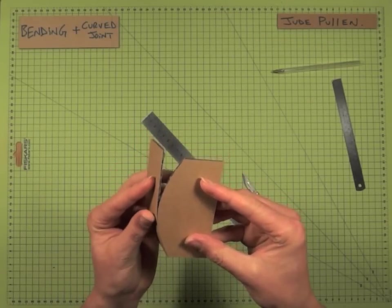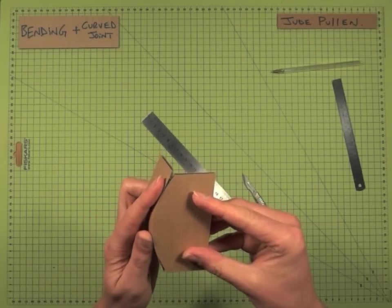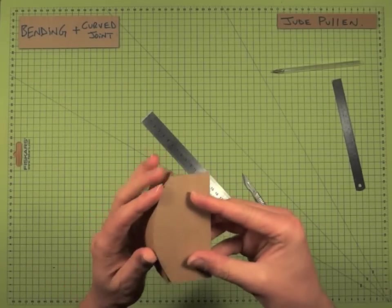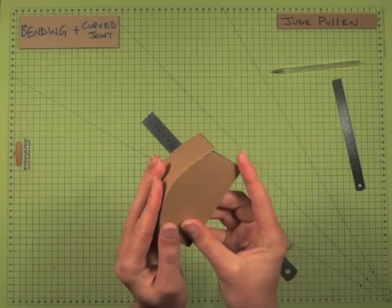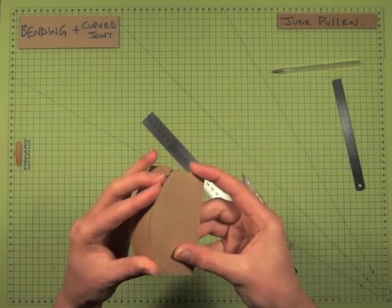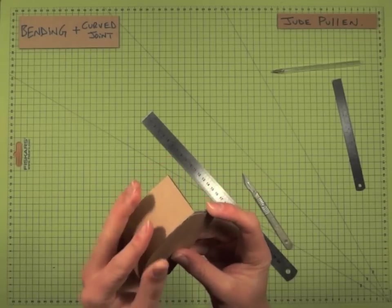And as you can see, I'm just tracking it round with my thumb. It doesn't matter if it comes loose, or the glue is still very hot, just keep encouraging it into position.